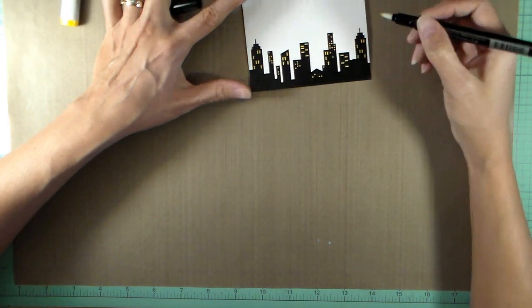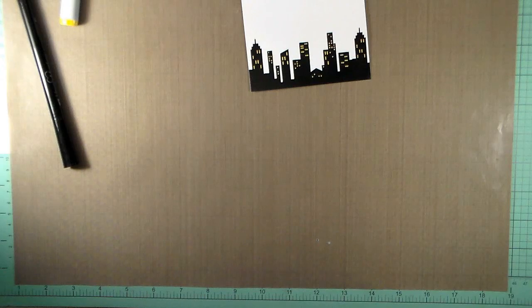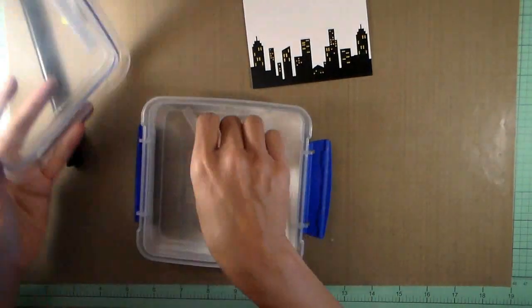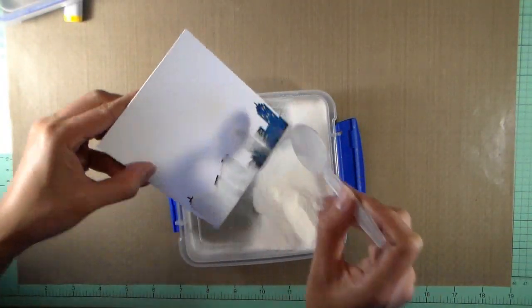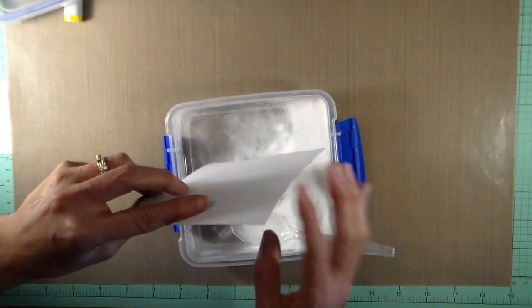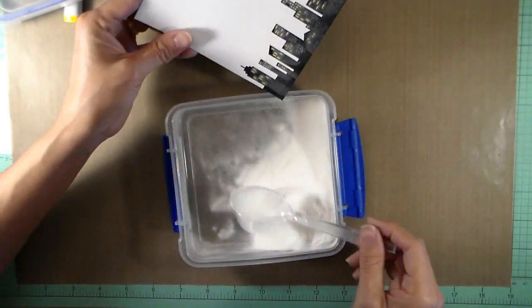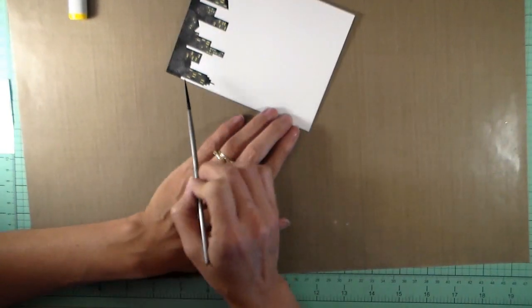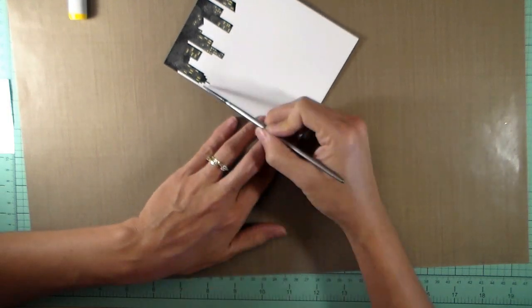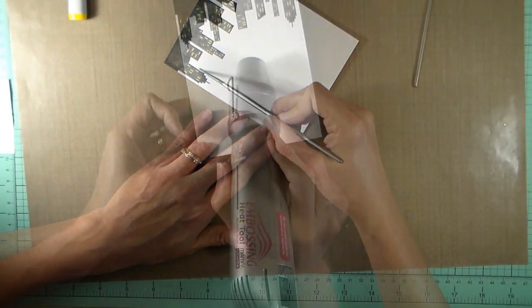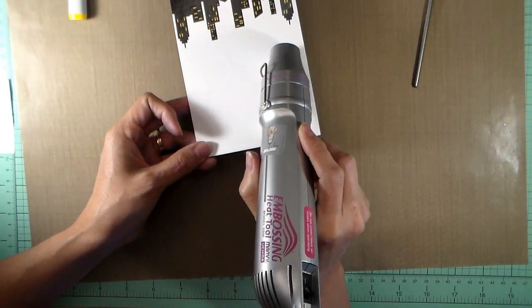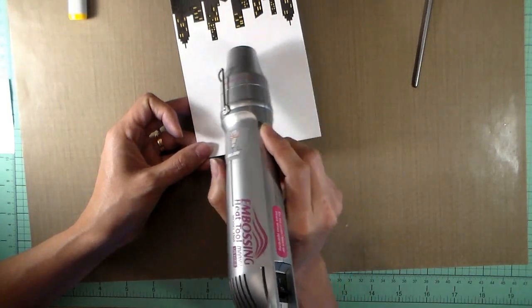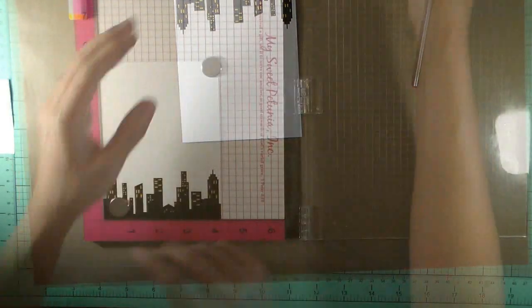As soon as I'm done covering all the lights with my Versamark, I'm going to use my embossing powder - white embossing powder. It doesn't matter if you get more embossing powder on the black. You just have to be very careful to make sure that you wipe off all of the embossing powder from around the buildings, because you don't want to have the strays there when you do your distress inking.